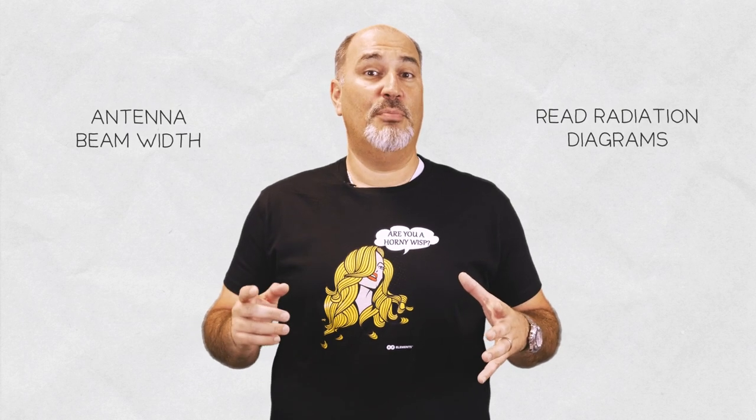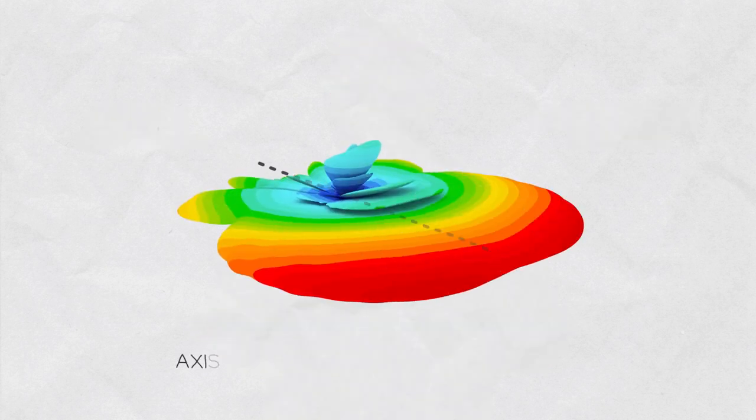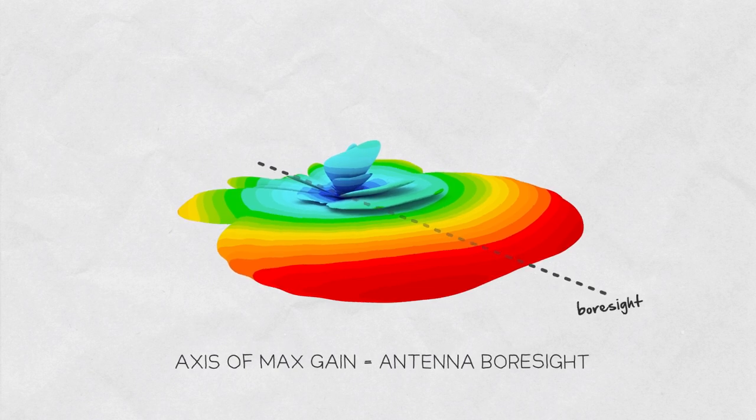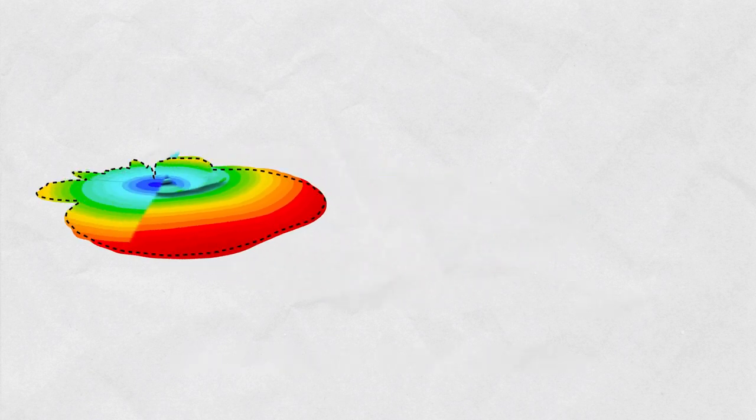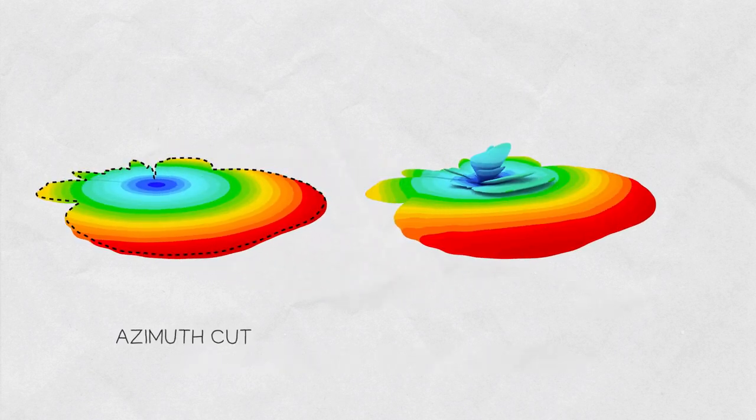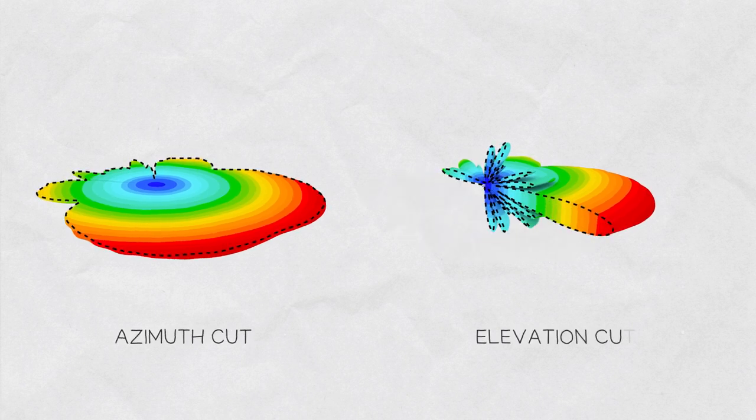Before we do, let me explain a few important things first. The axis of maximum gain on a directional antenna is called its boresight. If we cut a 3D diagram on its horizontal plane we call this the azimuth cut. If we cut this diagram on a vertical plane we call this the elevation cut.